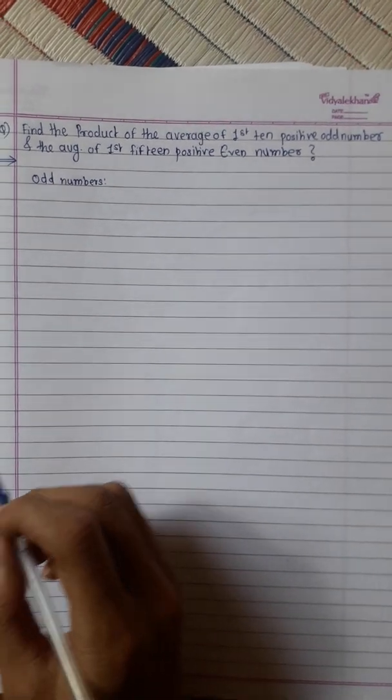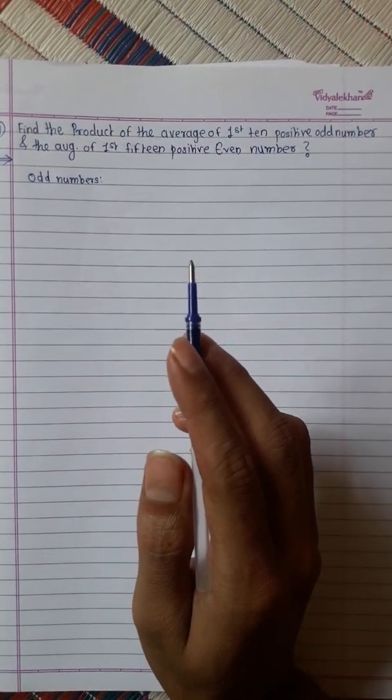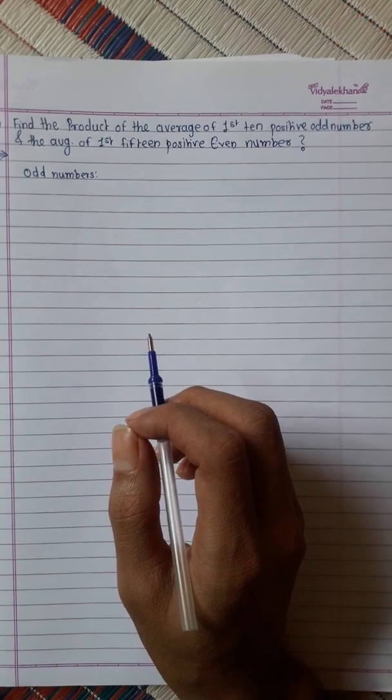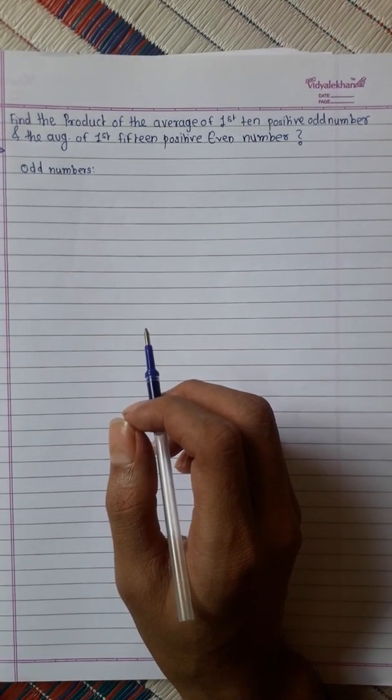Friends, today we will solve this question. Find the product of the average of first 10 positive odd numbers and the average of first 15 positive even numbers.